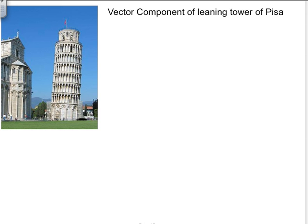Let's take a real-life example now of vector components. So we all know the Leaning Tower of Pisa, and it's leaning at an angle of 84.5 degrees.